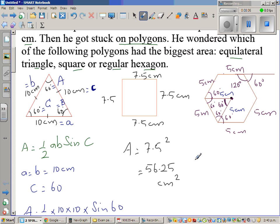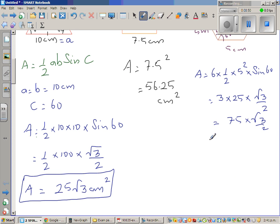The area of this polygon would be 6 times the area of this triangle, because if you add up the six equilateral triangles, you'll get the area of the hexagon. It'll be six times half times two sides, which is five squared, times sine 60. This is six times half is three times 25 times root 3 over 2. This is 75 times root 3 over 2, which is 37.5 root 3.